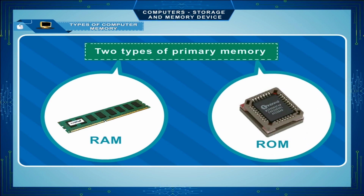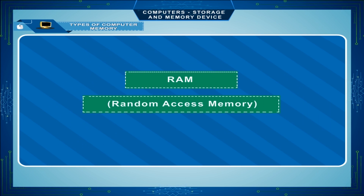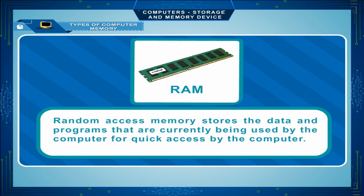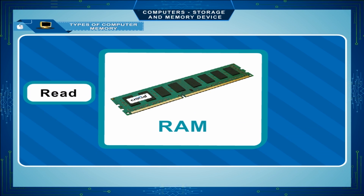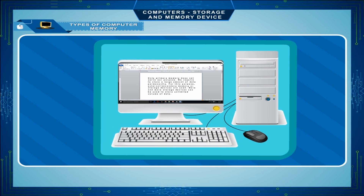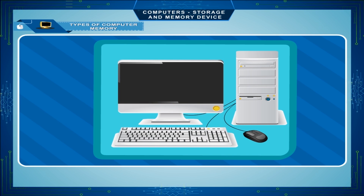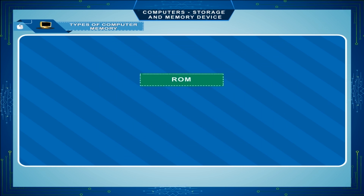There are two types of primary memory: RAM and ROM. RAM stands for Random Access Memory. It stores the data and programs currently being used by the computer for quick access. The RAM can be read from and written onto, so it is also known as read/write memory. Its contents are lost when the computer is switched off, making it a volatile or temporary memory.